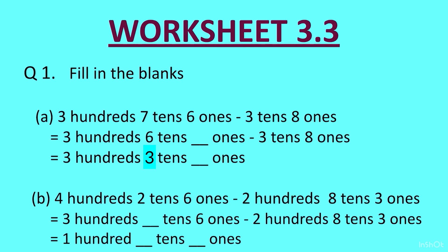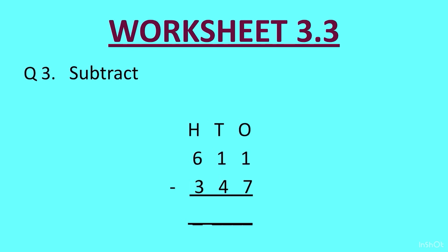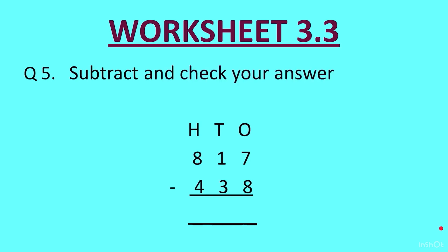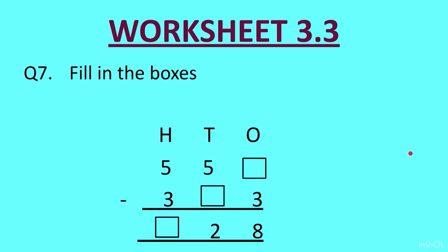Question 2: subtract 583 minus 467. Question 3: 611 minus 347. Question 4: 403 minus 256. Question 5: subtract and check your answer — 817 minus 438.